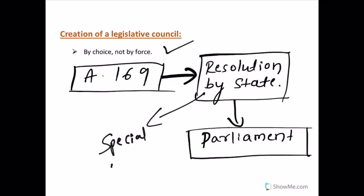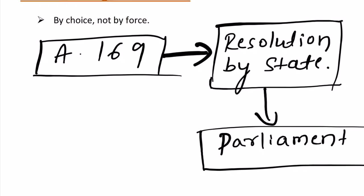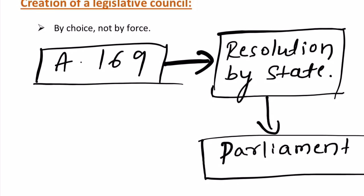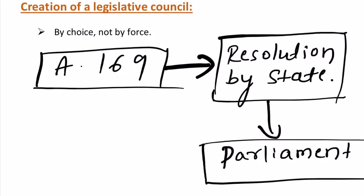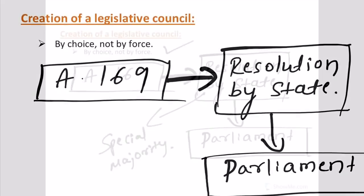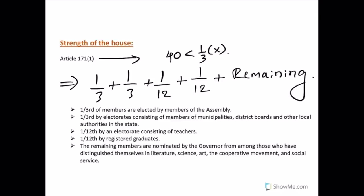Here, special majority means majority of the total strength of the house and two-thirds majority of the members present and voting — that is, absolute plus special majority. Now, as per Article 171, clause 1 of the Constitution, the total number of members in the legislative council of a state shall not exceed one-third of the total members in the legislative assembly.